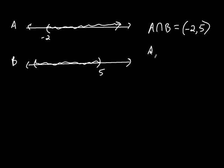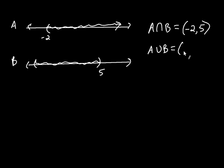Now the union of these two sets — union means any number belonging to either set. Do you see how every number is included in one of these sets? The union is going to be negative infinity to infinity, because every real number is included in one of these sets.